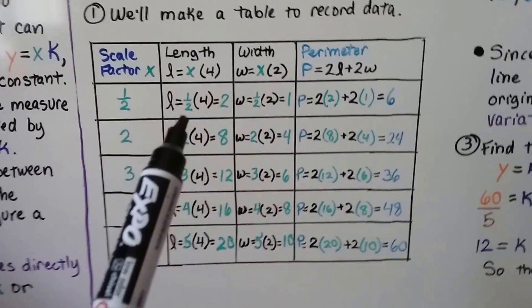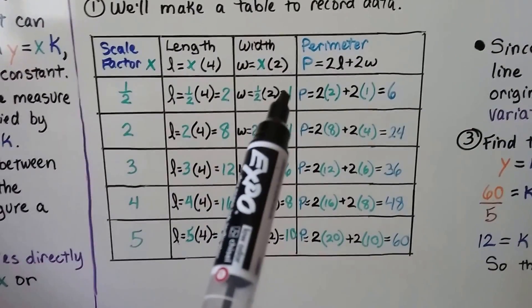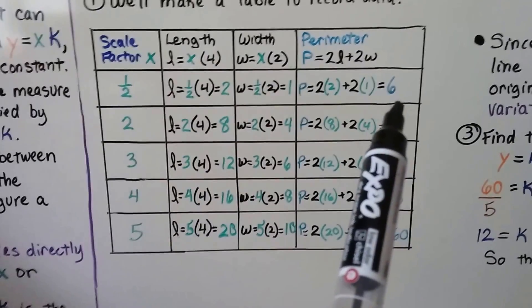We multiply, we do half times 4, which gives us a 2, a width of 1, and a perimeter of 6.